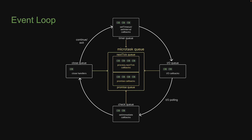We also learned that the event loop comprises 6 different queues: 2 microtask queues, namely the nextTick queue and promise queue, a timer queue, an input/output queue, a check queue, and finally a close queue.